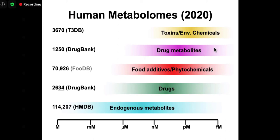There's a whole variety of toxins and environmental chemicals — far more than 3,600, but these are the most toxic and most abundant ones. We keep those in a database called T3DB, the toxic exposome database. So a whole range of compounds in the human body, from exposures to drugs, foods, and endogenous metabolites, spanning many orders of magnitude in concentrations from 10⁻¹⁵ to roughly 10⁻¹ molar.